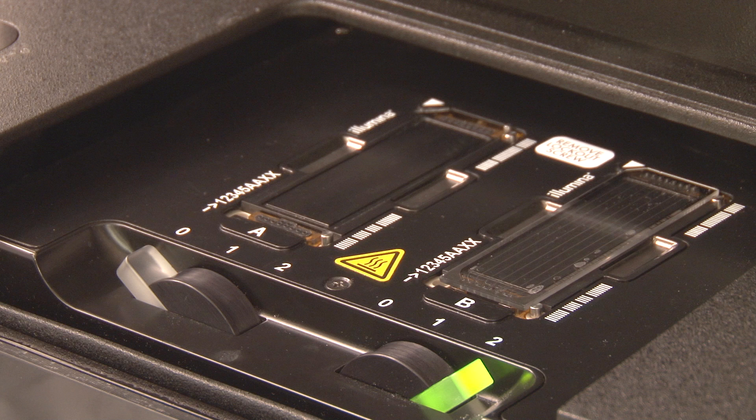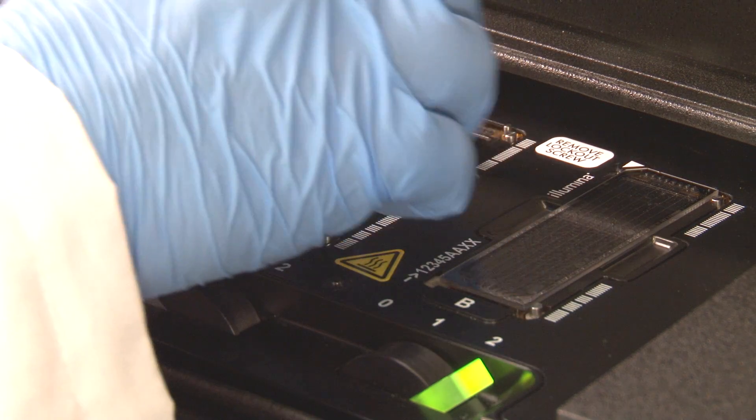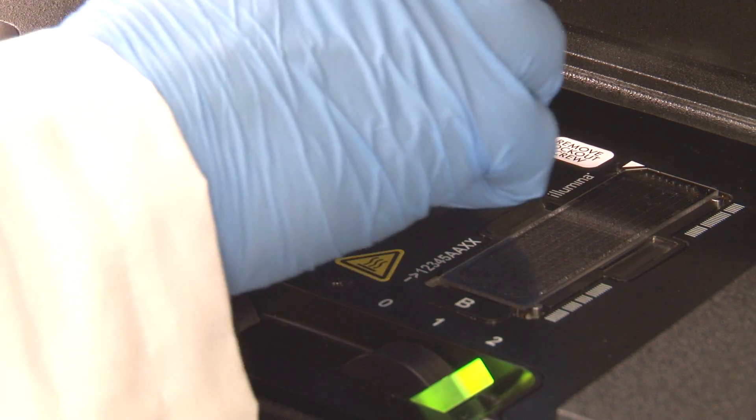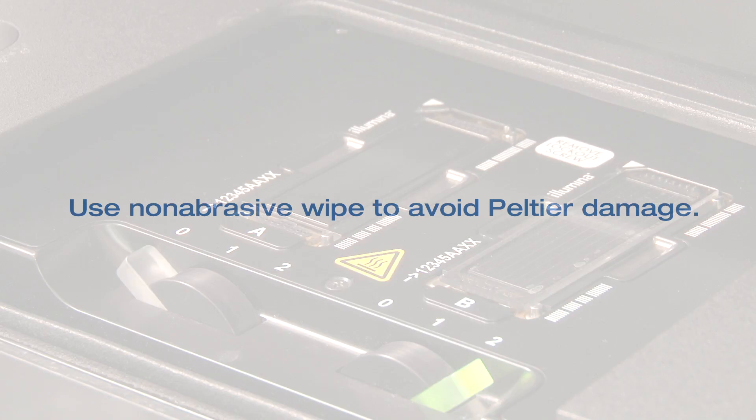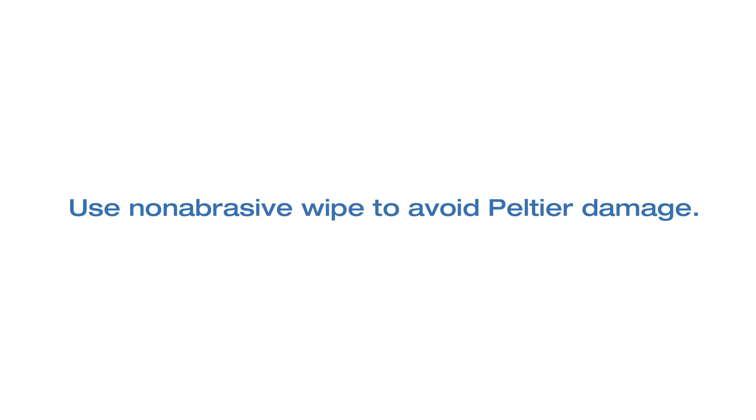This metal surface is heated and cooled during the sequencing run, as required by the SBS chemistry. It is important to clean the stage before each run with ethanol or isopropyl alcohol. Be sure to use a non-abrasive wipe, as the Peltier plates are optically flat and must not be chipped or damaged.